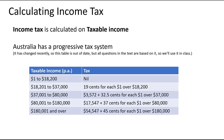Australia has what we call a progressive tax system. In some places they have a flat tax rate where you might just pay 20 cents for every dollar you earn. Here, the more you earn, the greater the amount of tax you pay on the earnings over a certain amount.